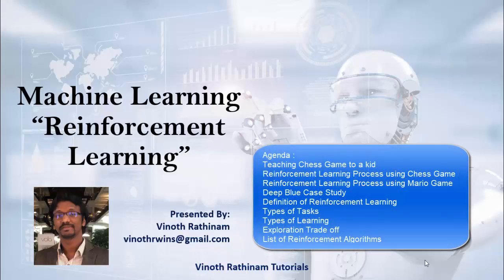Hello everyone, welcome to Vinoth Rathinam tutorials. In machine learning we have three types of learning process: supervised learning, unsupervised learning, and reinforcement learning. In this video we are going to learn about reinforcement learning using examples like chess and Mario games. In my previous video I have already explained about both the supervised and unsupervised learning. If you are new to these AI tutorials, please glance at both those videos.